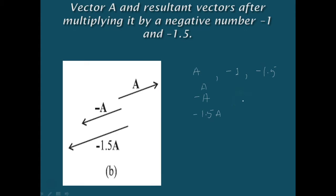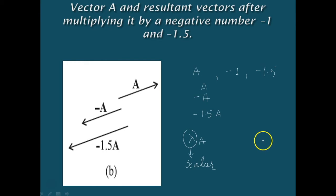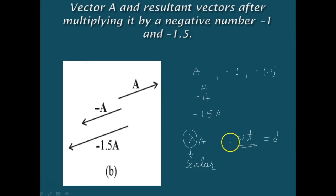The factor delta by which a vector A is multiplied could be a scalar having its own physical dimension. Then the dimension of delta A is the product of the dimensions of delta and A. For example, if you multiply a constant velocity vector by duration of time, we get a displacement vector — velocity multiplied by time gives displacement.